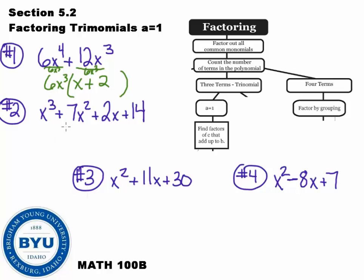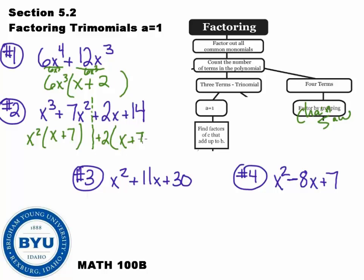Number 2: any common stuff? No. How many terms? One, two, three, four — a four-term polynomial. Factor by grouping — that's the chainsaw method. On the left, I take out x squared, leaving me with x plus 7. On the right, I take out 2, leaving x plus 7. Remember, when factoring by grouping, you pull out the common parenthesis, which is x plus 7, and then write what's left over in the other parenthesis: x squared plus 2. The answer is (x plus 7)(x squared plus 2).